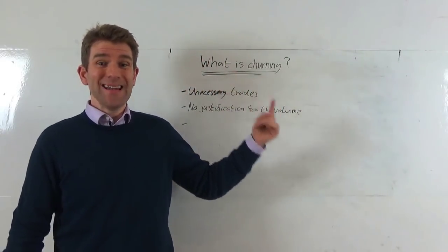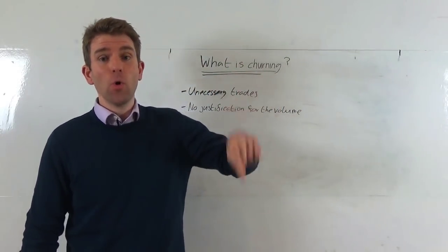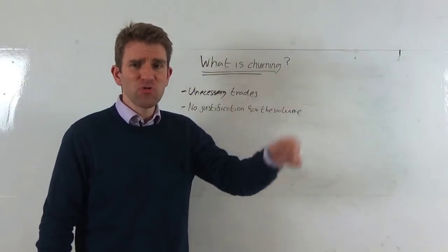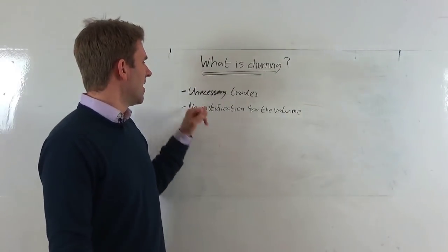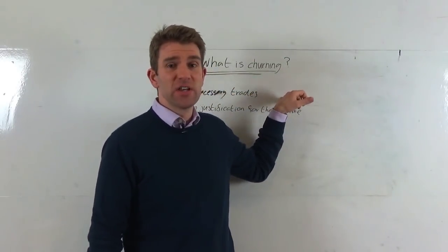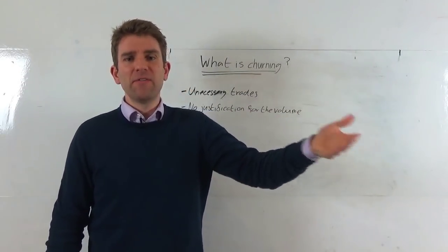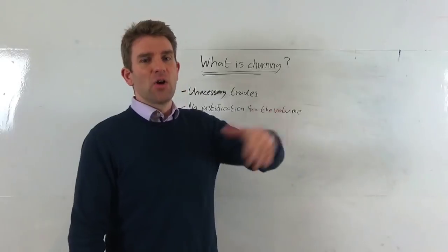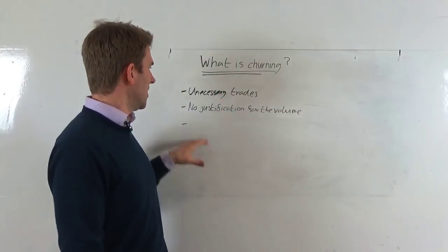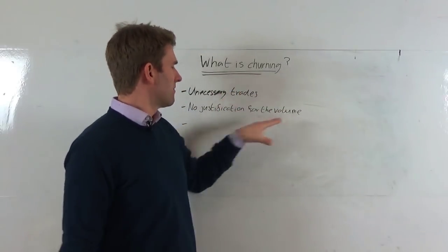The official definition is churning: a broker doing it illegally to generate money for his firm or himself, trading many times unnecessarily. The proof is if he's made unnecessary trades. If you could prove and say why did you do that, why did you make five trades here, going back to your investment thesis or goals.